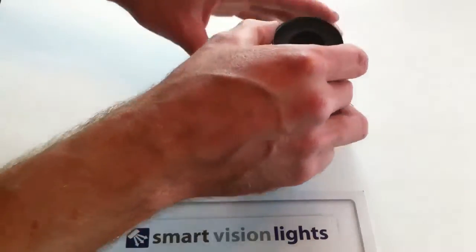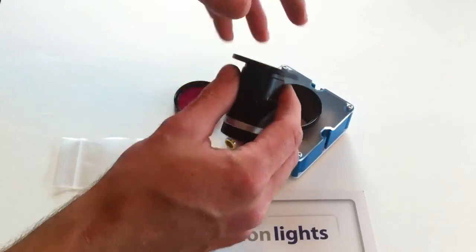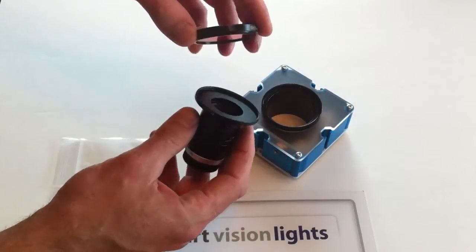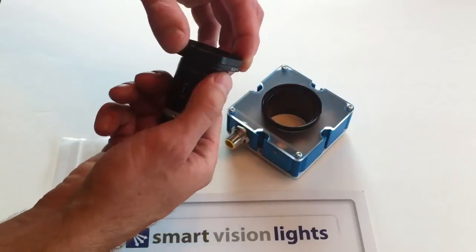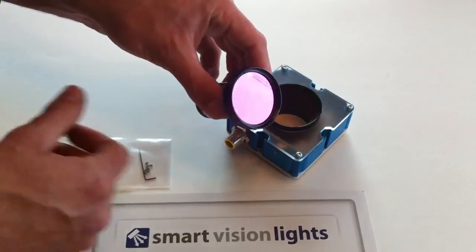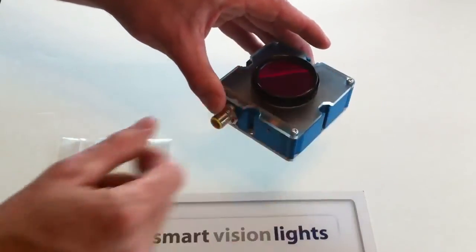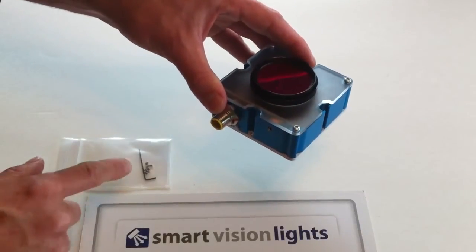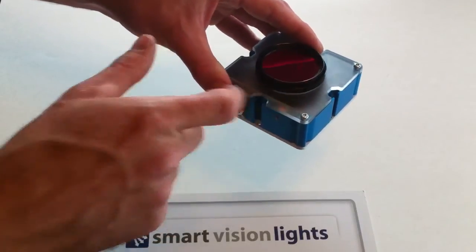Now, if you still need to use that machine vision filter that we discussed earlier, it threads right onto the face of that adapter, drops right into the front for the front mount design, tightens in with set screws supplied in the kit.